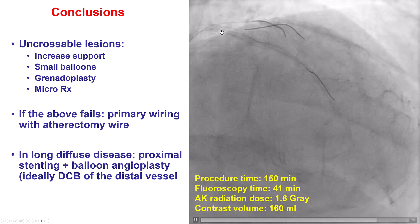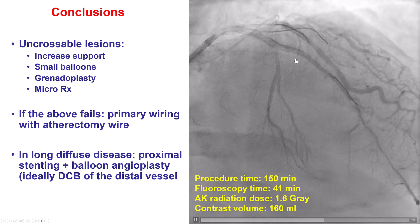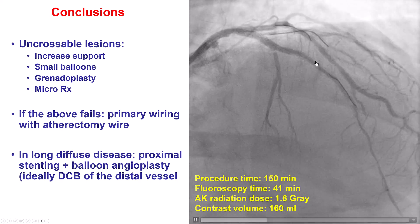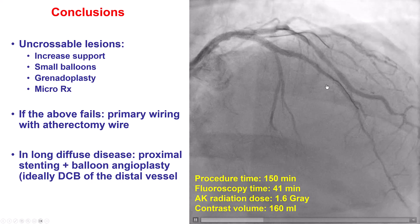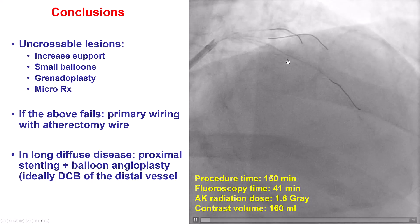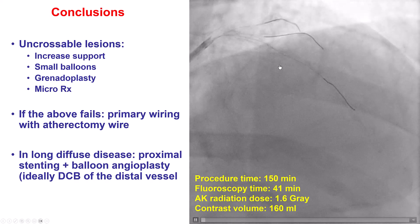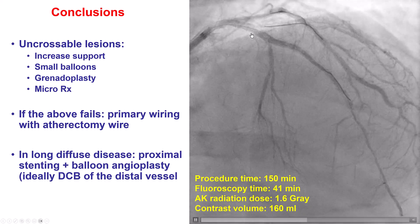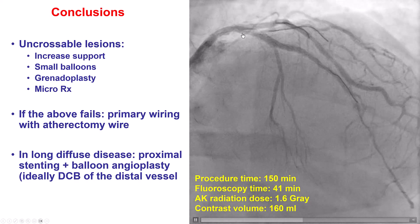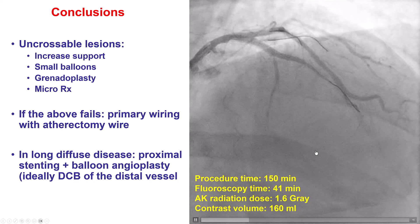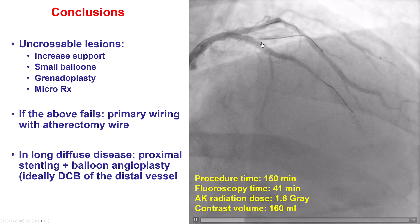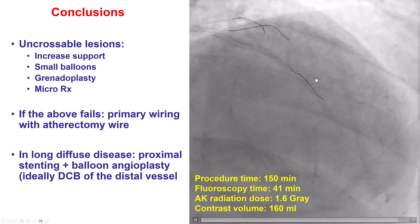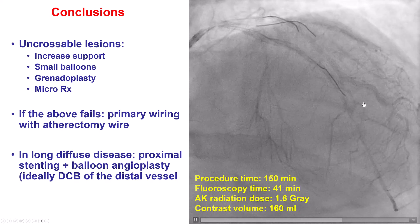In summary, this is an example of an uncrossable lesion — uncrossable with balloons and microcatheters. We used several techniques including small balloons, grenadoplasty, the micro-RX, and guide extension, but despite that could not advance the equipment further down. We then advanced the microcatheter as far as possible, removed the Fielder XTR wire, and inserted a rotafloppy wire over which we did multiple passes of rotational atherectomy, enabling balloon advancement and successful lesion expansion. We decided to only stent the proximal portion of the vessel given the small distal size, in the hopes that either there will be no restenosis, or if there is, we will have access to drug-coated balloons to treat this segment.